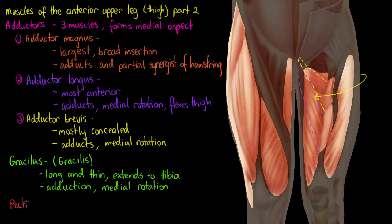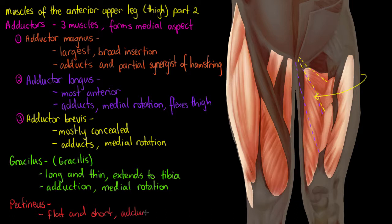The last muscle we'll cover in this video is the pectineus. I've highlighted it here — it's going to be the muscle that almost completely conceals your adductor brevis. It's a fairly flat and short muscle, and its actions are again adduction and medial rotation. Because it conceals the adductor brevis, that means it's more superficial to it. I know it's starting to sound like a broken record, but adduction and medial rotation are things you need to know.